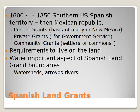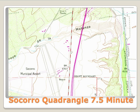Water was especially important in this area of the United States, so you see water boundaries — watersheds, arroyos, and rivers — as important aspects of the edges of these land grants, or a land grant occupying an entire small watershed. Here is the Socorro quadrangle, a seven-and-a-half-minute map, and you can see that these grant boundaries are still identifiable on the USGS topo maps.